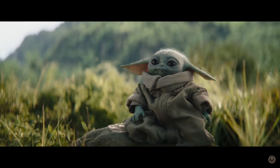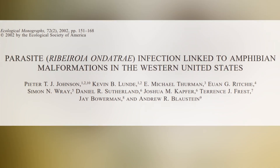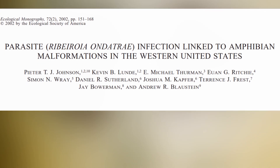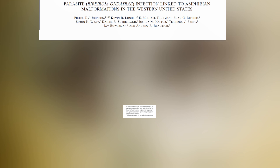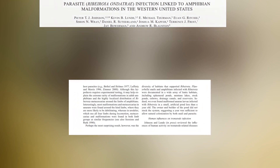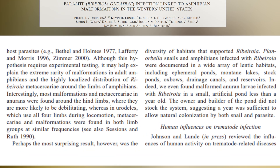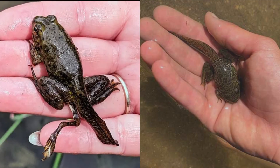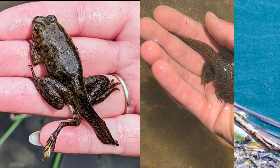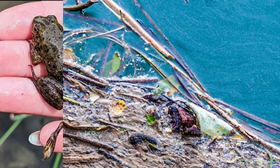In the parasite's goal to be eaten by a bird, these deformities seem to be quite successful. In a large study that surveyed over 100 locations and more than 12,000 amphibians, researchers described infections in adult amphibians to be extremely rare, suggesting a survival bias in that non-infected amphibians were just more likely to be found as adults because the infected ones had already been consumed.